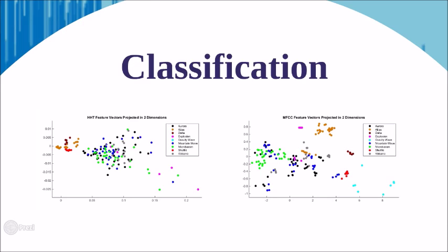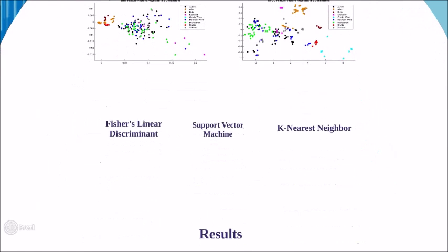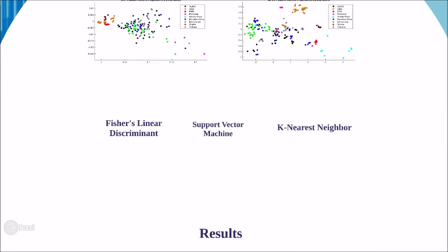The final step is classification. Given the feature vectors obtained from nine different classes, we used three different classification techniques: Fisher's linear discriminant, support vector machine, and k-nearest neighbor.